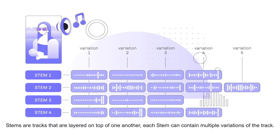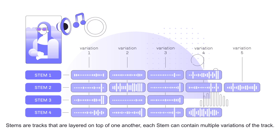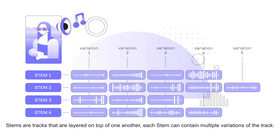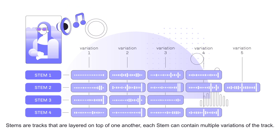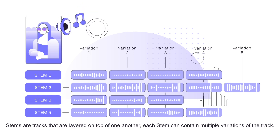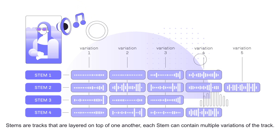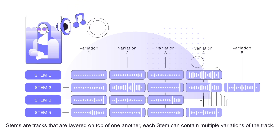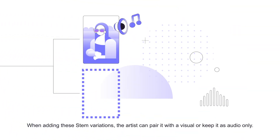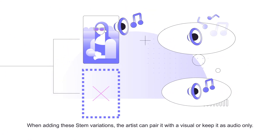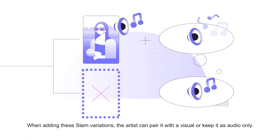Stems are tracks that are layered on top of one another. Each stem can contain multiple variations of the track. When adding these stem variations, the artist can pair it with a visual or keep it as audio only.